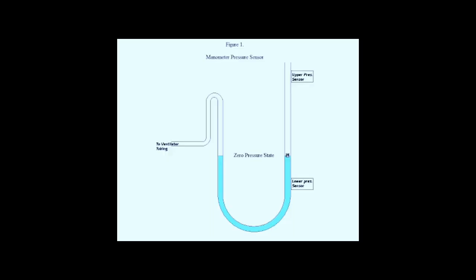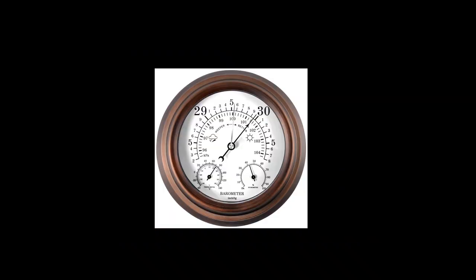Now, pressure measuring devices. First of all, is the manometer. If you shape the tube with fluid, pressure difference shows as height difference. Secondly, barometer measures atmospheric pressure using mercury columns.